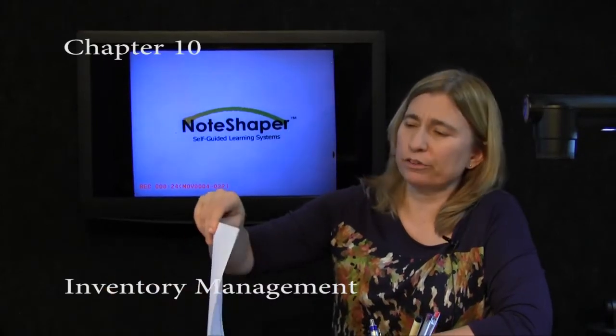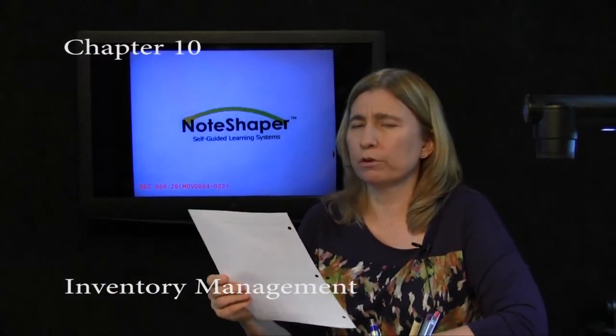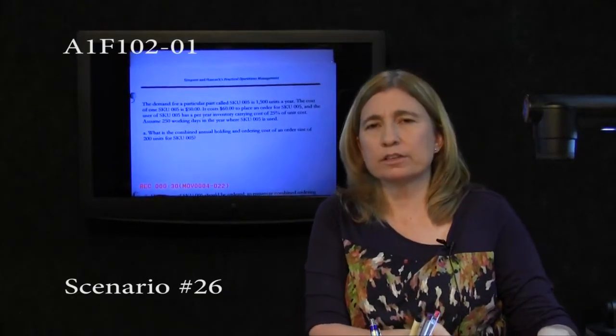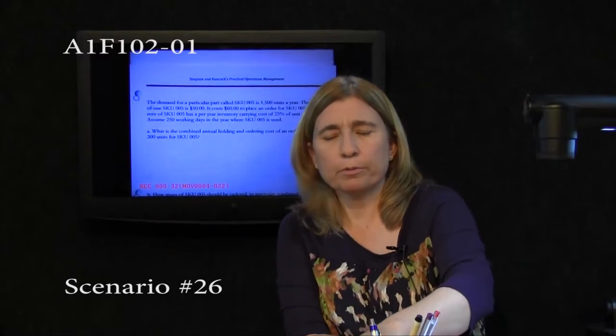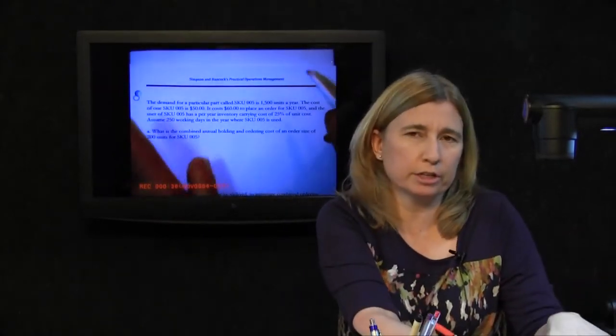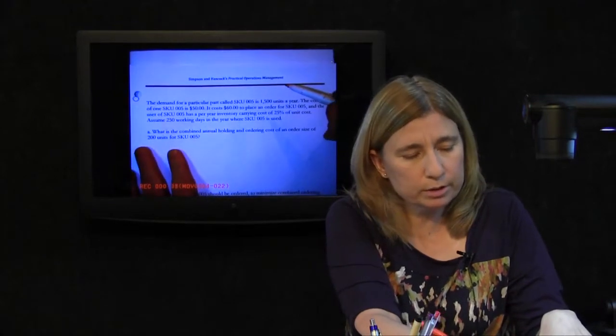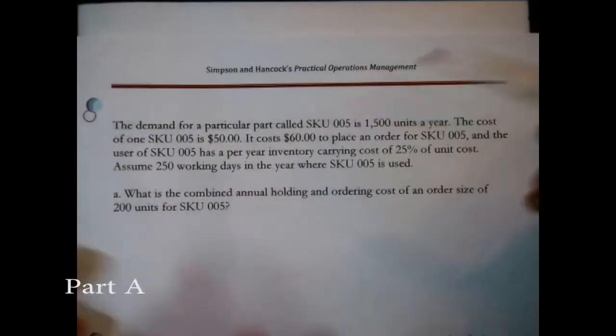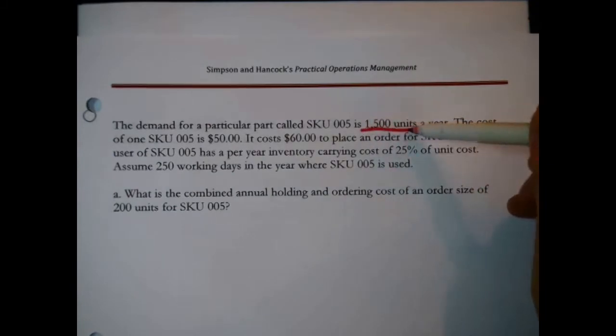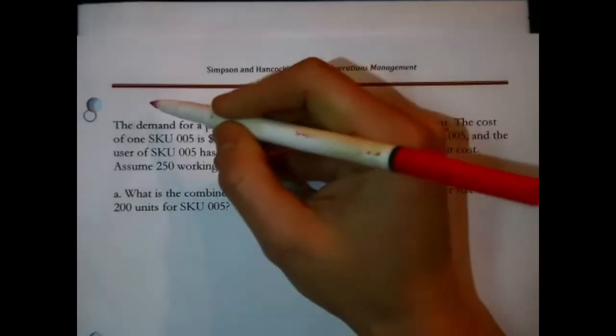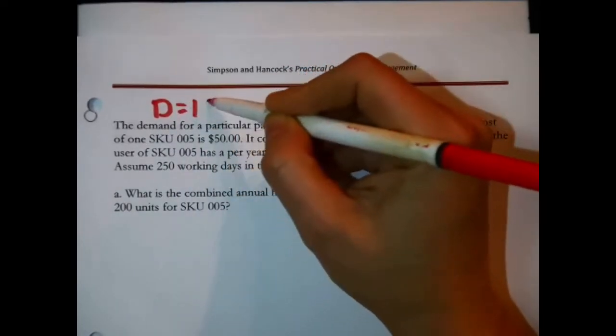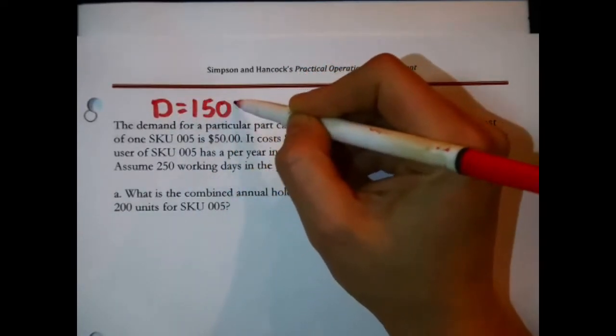The scenario with SKU005 is an EOQ problem. How do you tell it's an EOQ problem? Primarily by noticing the particular set of information that it gives you. Let's take a look. The demand for a particular part called SKU005 is 15,000 units a year. It immediately reports capital D for annual demand.